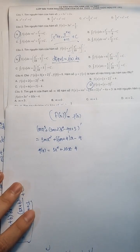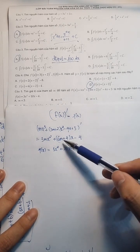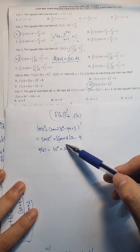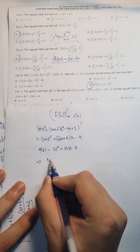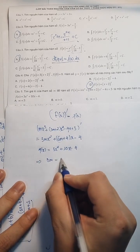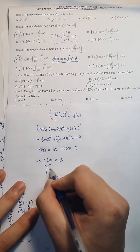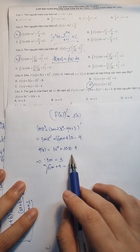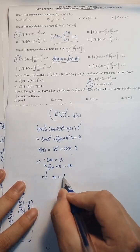Thế và đề nó cho F(x) bằng 3x² + 10x - 4. Thì đến đây các bạn sẽ đồng nhất hệ số. Từ đây các bạn rút ra: để được là 3m thì sẽ bằng 3. Tiếp tục là 6m + 4 thì bằng 10. Trừ 4 thì bằng trừ 4 rồi đúng không? Vậy từ đây mình suy ra m thì sẽ bằng 1 đúng không nhé?